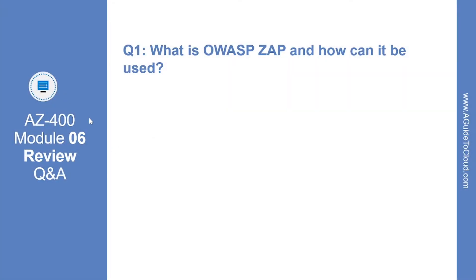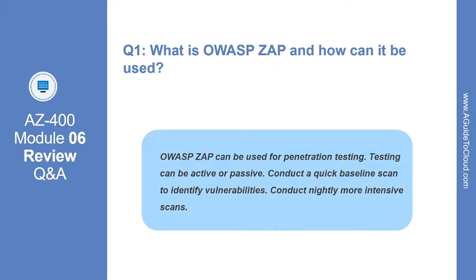Let's look at the first question. What is OWASP ZAP and how can it be used? OWASP ZAP can be used for penetration testing and testing can be active or passive. You can conduct a quick baseline scan to identify vulnerabilities and you can conduct nightly more intensive scans as well.